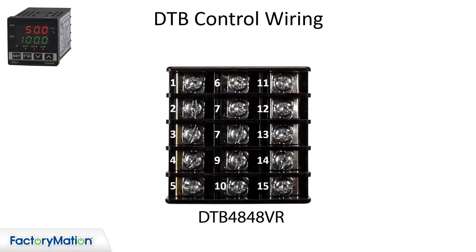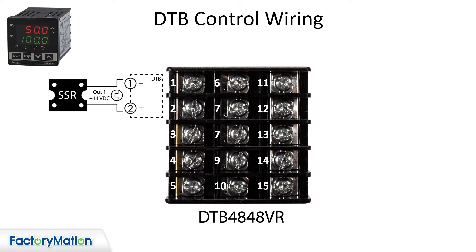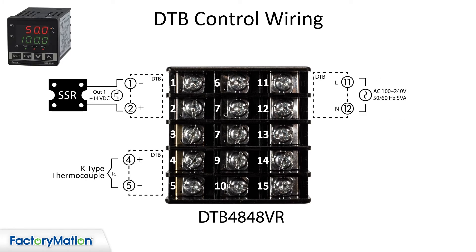This example uses a DTB 4848VR. Connect a solid state relay to output terminals 1 and 2. Connect the thermocouple to terminals 4 and 5. Connect the incoming AC power to terminals 11 and 12.